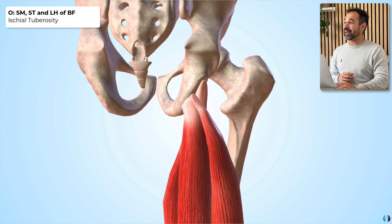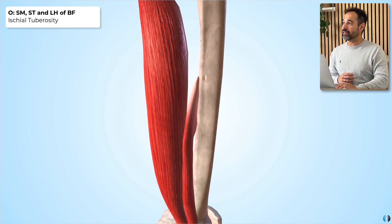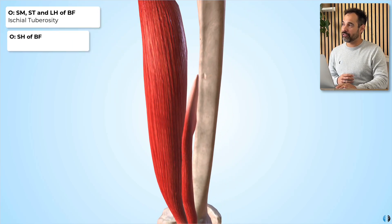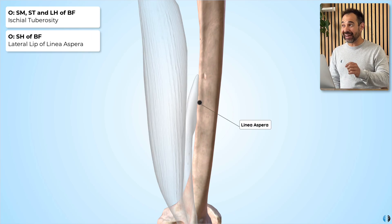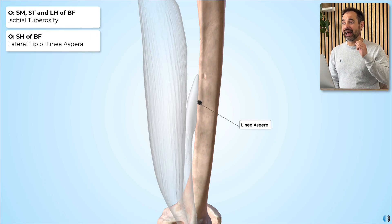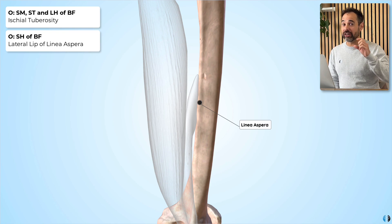The short head of biceps femoris originates from the lateral lip of the linea aspera of the femur, which is about two-thirds of the way down the femur.